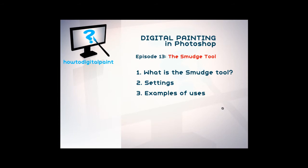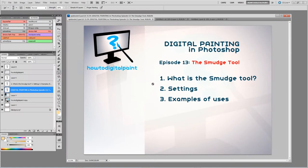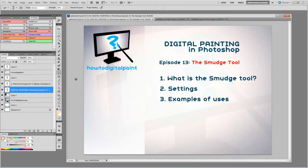We'll look at the technical aspects and also some examples of how we can use it. First of all, we find the smudge tool in the tools palette. The default hotkey is the letter O — I've set it to S. If you can't find it, it's in the same submenu as blur and sharpen, so you may see the icons for those.